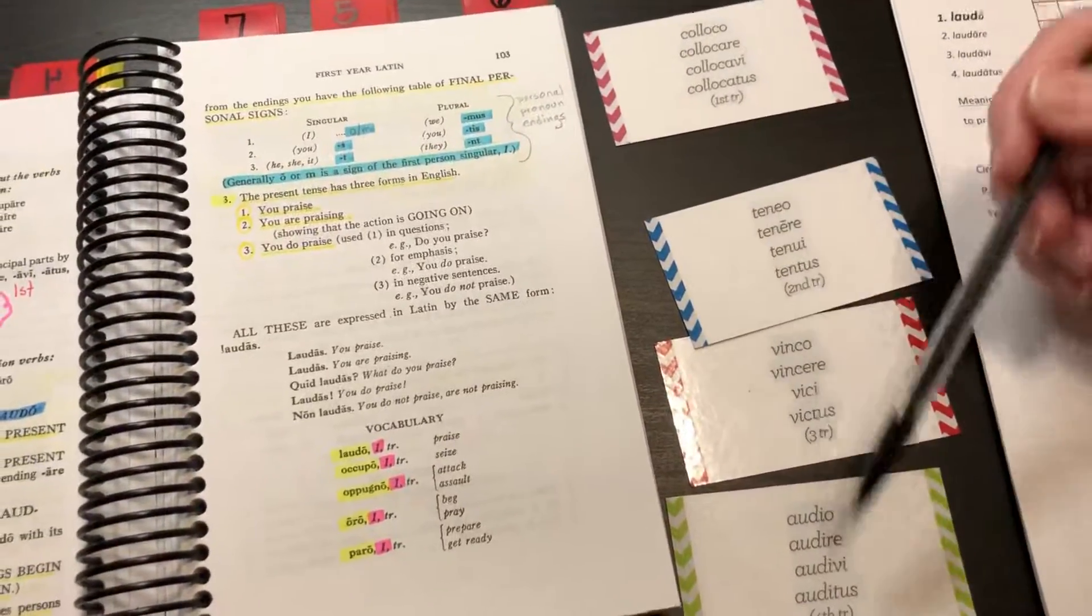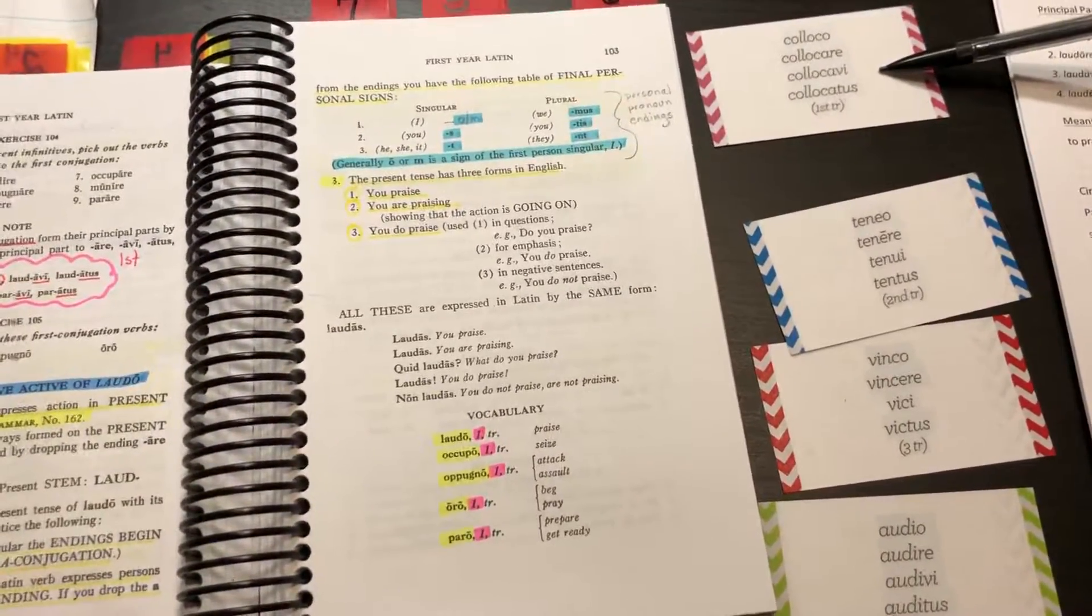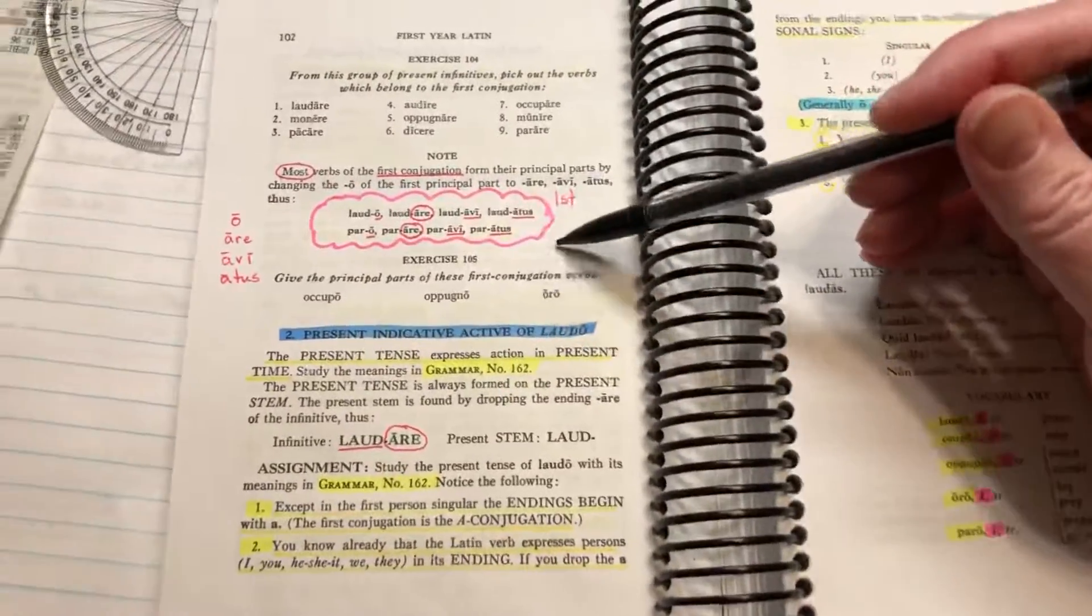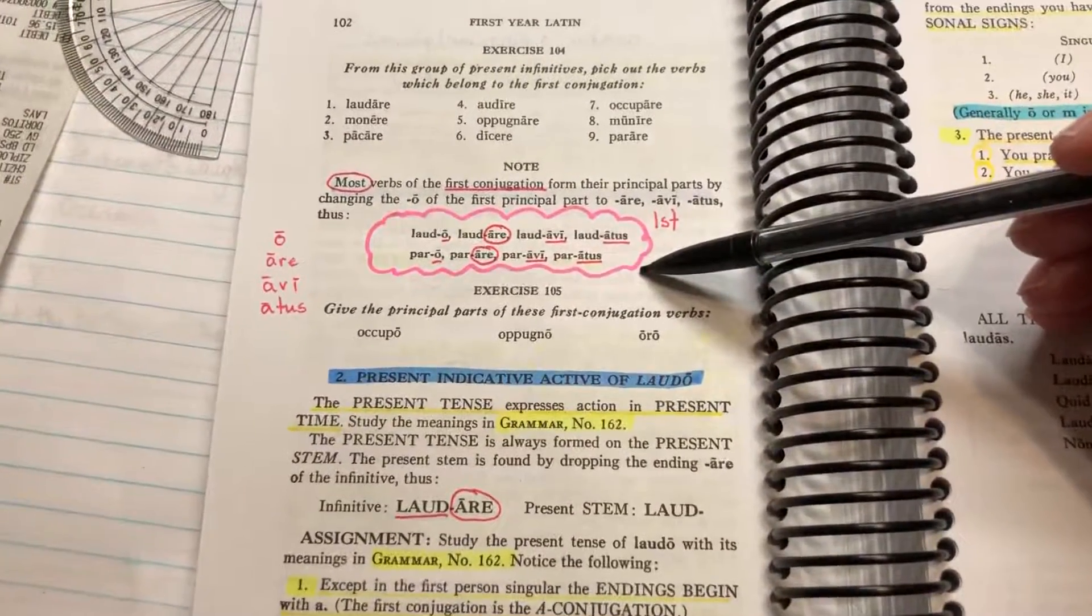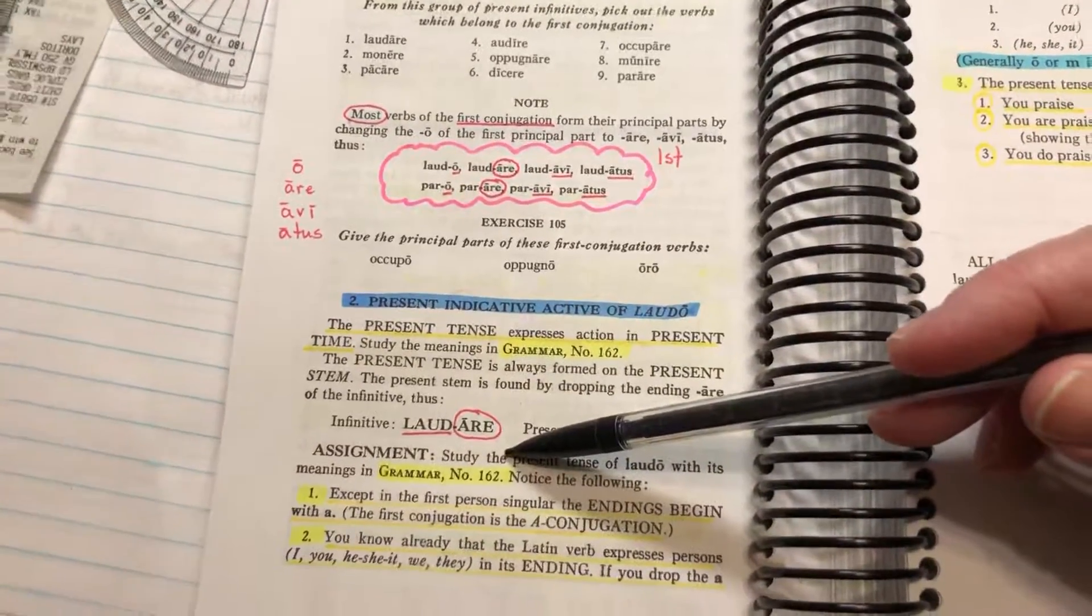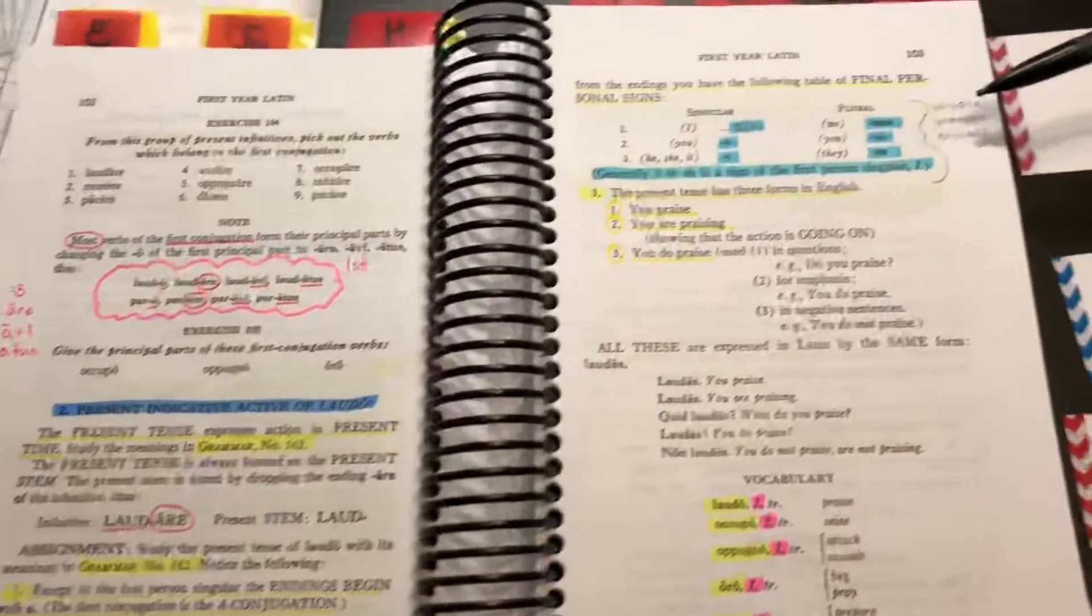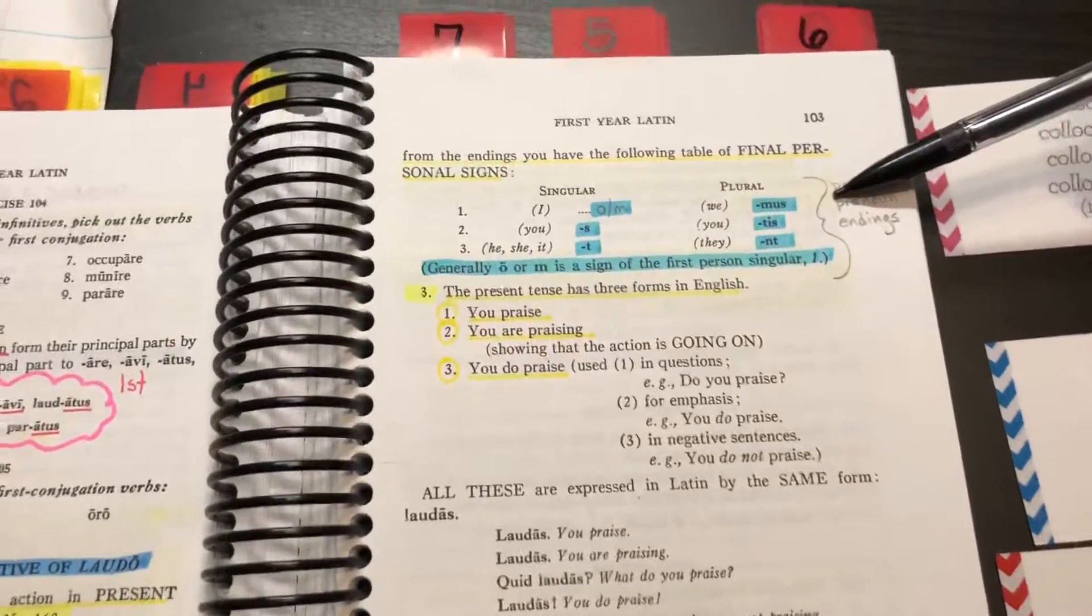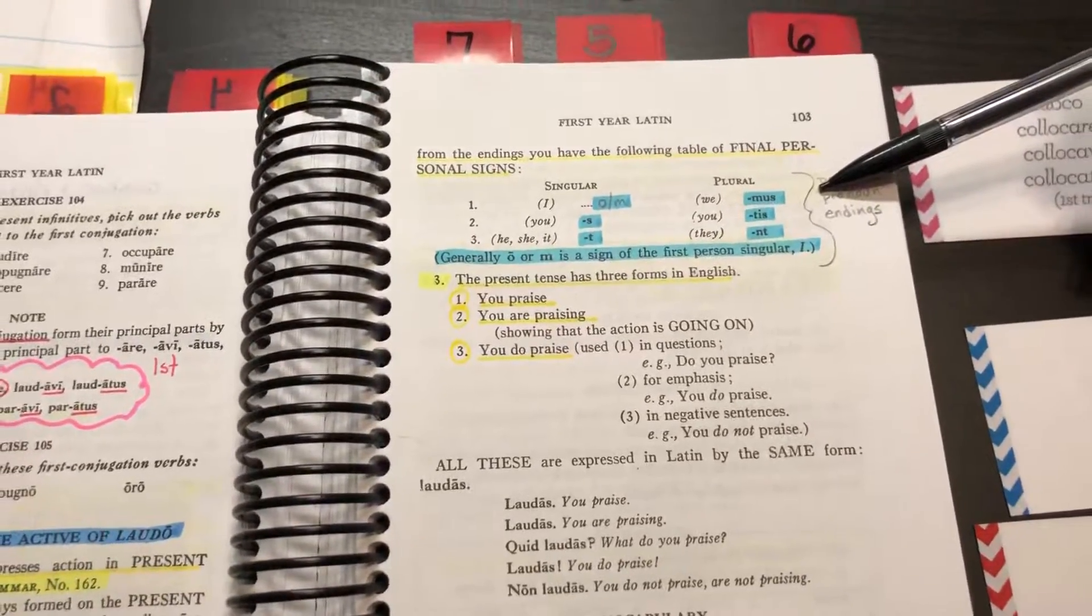Because first conjugation is pink, where we introduce first conjugation here, I've got my Flair pen going in pink, and you can see it down there as well. One other thing that I have done, I have this different chart I'll show you in a minute that helps us learn to decode the verb.